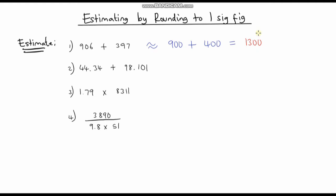900 plus 400 is just 1,300. Our answer, although it's not exactly the same as the precise calculation, it's very close to what we would get. So we round each value to one significant figure.